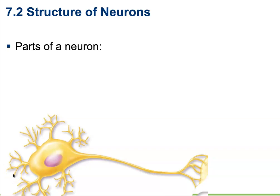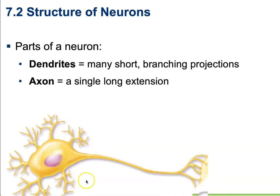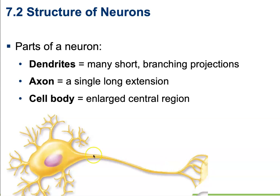Next up, we want to talk about the different parts of a neuron, starting with dendrites. Dendrites are these very short branching projections found over here on the neuron. Next up will be the axon — a single long extension through which information is going to be passed. And then finally, the cell body, which is the enlarged central region found right over here.